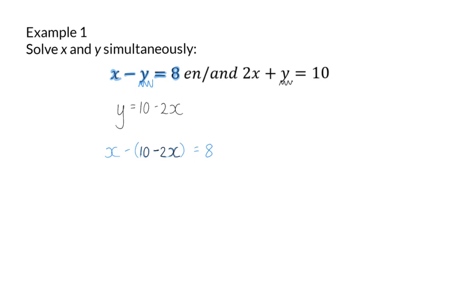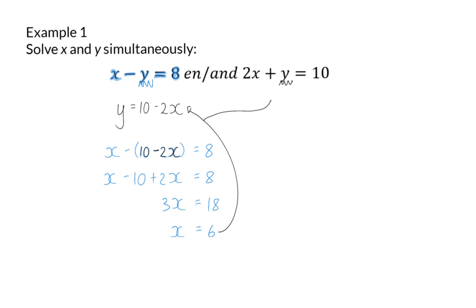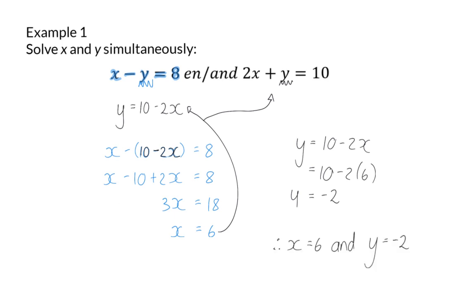Here I now have an equation with only x's in, so I can solve x. So x minus 10 plus 2x is equal to 8, which means that 3x is equal to 18, and I will get the same answer as earlier for x, and that is 6. Now I can substitute this x value into the adjusted equation, and I'm going to substitute x with 6. This means I get the same y value as earlier, and y will be minus 2. So here you can see that substitution can be applied in many different ways. You need to choose the easiest option for you.